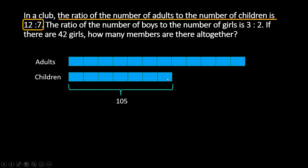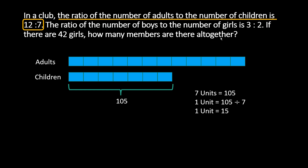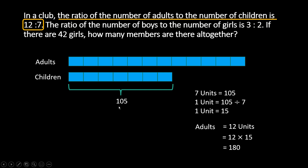So 7 units is equal to 105, so 1 unit will be equal to 105 divided by 7, which is 15. So each of these units here is 15. The question asks how many members are there altogether, so it includes the adults and the boys and the girls. Adults is equal to 12 units and each unit is 15, so 12 times 15 gives us 180. We already know children is 105. So adults plus children is equal to 180 plus 105, which gives us 285. That's the solution.